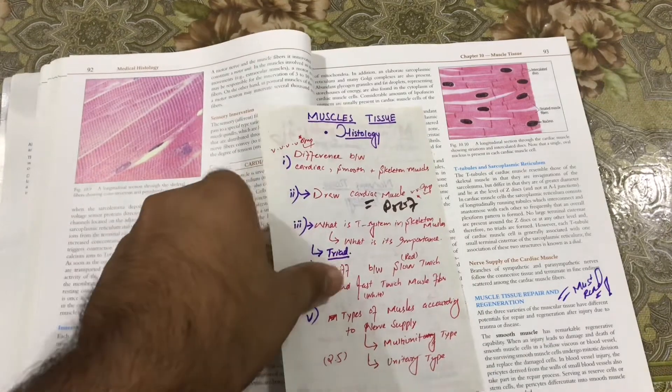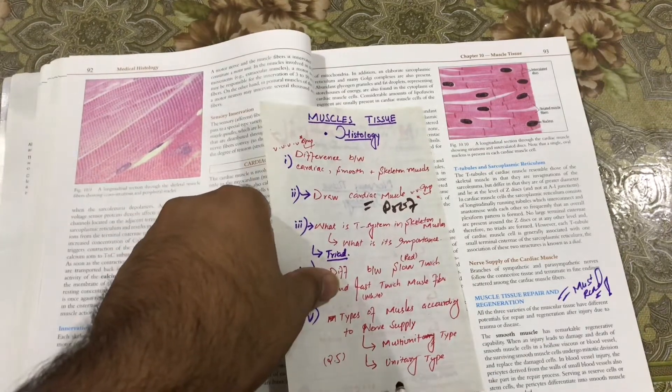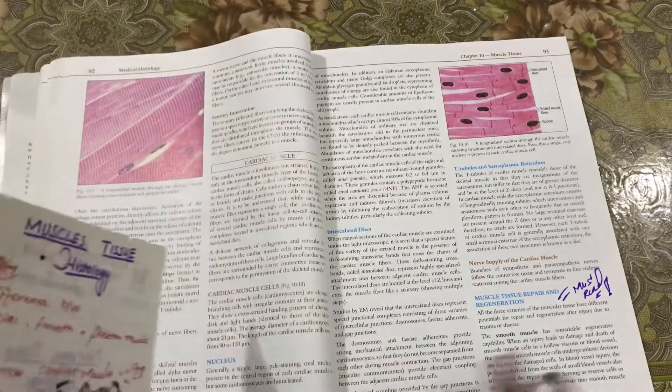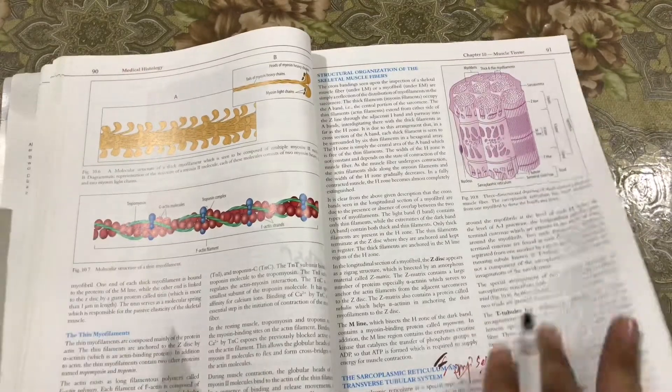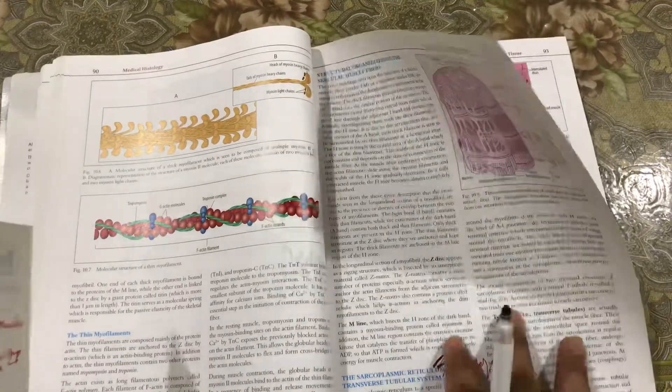Okay, here probably not available, so you have to show it through net. I will also share it. Then types of the muscles according to nerve supply, multi-unitary and unitary. So this is a question. You should answer this question, probably not available here. Let's see. Yes, here this question you should answer, okay.